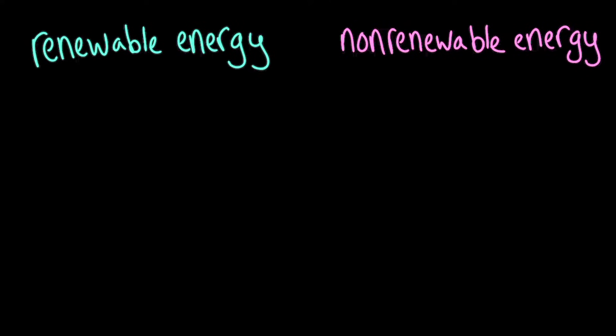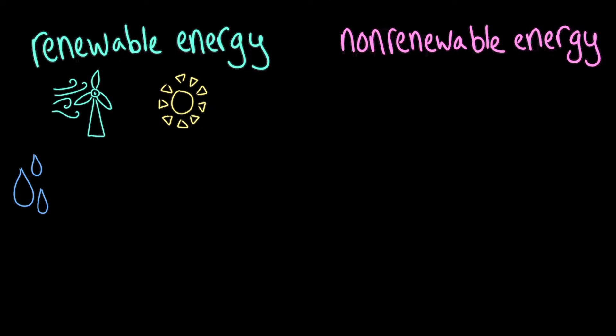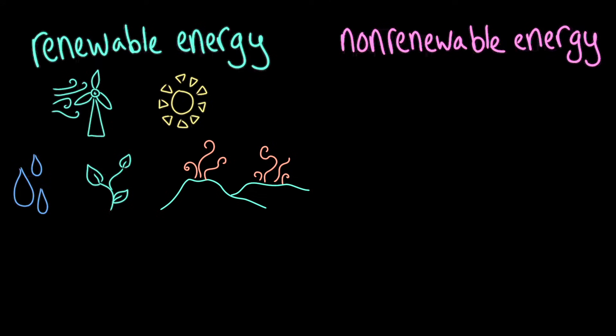I can always remember what renewable resources are because the prefix re- means again, and the root new refers to the origin of the energy source. So renewable energy sources are the sources that we can use again and again, and are quickly restored by natural processes. Renewable fuel sources include sunlight, wind, moving water, biomass from fast-growing plants, and geothermal heat from the earth. The lifespan of renewable resources looks like a circle — we can use them, and then we can use them again, without worrying about them running out.